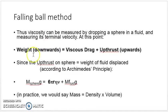This is equated by the equation: weight of the downward falling ball equals viscous drag plus upthrust. Since the upthrust on the sphere is equal to the weight of fluid displaced according to Archimedes principle.